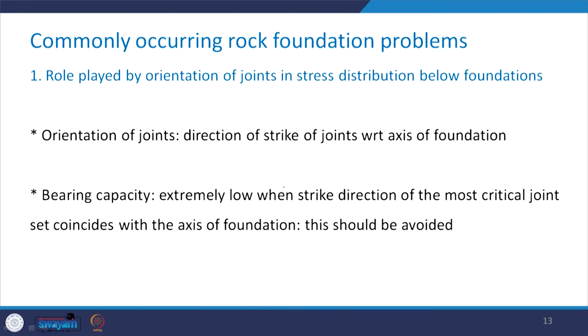Orientation of joints is the direction of the strike of the joint with respect to the axis of the foundation. Bearing capacity is extremely low when the strike direction of the most critical joint set coincides with the axis of the foundation — that is the very unfavorable condition and should be avoided.